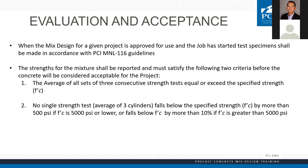Also look at criterion number two: no single strength test — the average of the three four-by-eight cylinders at 28 days — shall fall below the specified strength by more than 500 PSI if the design strength is less than 5,000. If it's more than 5,000, then it's 10% below the design strength. So we can't lose more than 10% of our design strength on any given point and still have an acceptable mix design. If you have a 7,000 PSI mix and a single test point comes back at 5,000 PSI — that's below that 10% threshold, so your mix design needs to be adjusted.